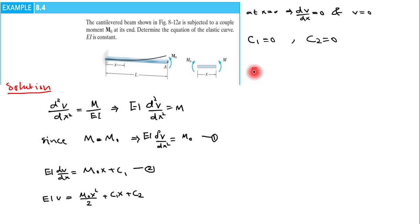So the equation will become EI multiplied by v equals M0 x² over 2. So we have v equals M0 x² over 2EI, and theta will equal M0 x divided by EI.